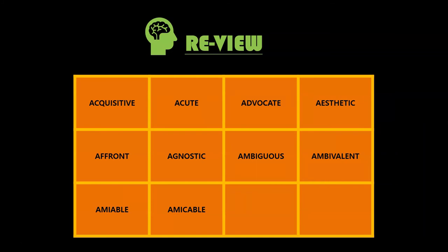Okay, let's review the words. Acquisitive — eager to acquire, so being greedy. Acute — like cutting, so sharp. Advocate — as vocal, so supporter. Aesthetic — like artistic, so regarding beauty. Affront — like confront, so offense, insult. Agnostic — toward knowing, so still skeptical. Ambiguous — around source, so vague.